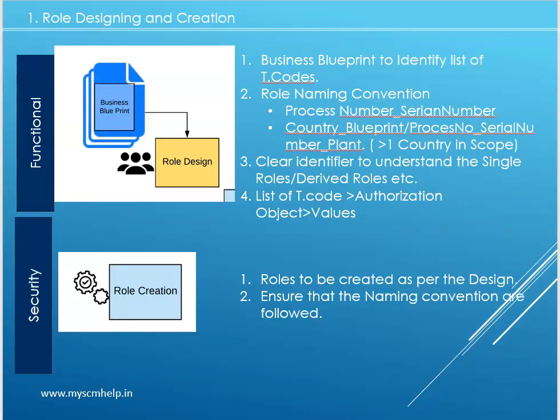As a first activity, during the blueprint we should have captured all required transaction codes and organizational elements — whether it's a company code or plant. That becomes our input document. Based on that we design the roles. We have not yet created them, so we need a role design document. Naming convention is also one important factor, so through it you can identify what the role is actually doing.